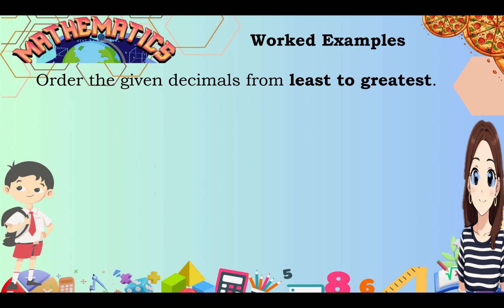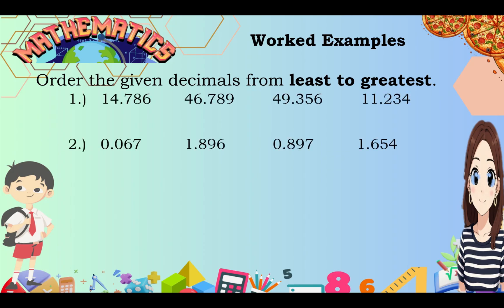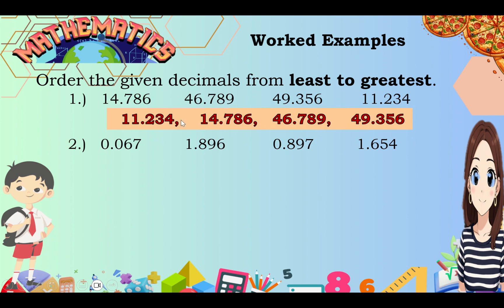Work examples — order the given decimals from least to greatest. Number 1: 14 and 786 thousandths, 46 and 789 thousandths, 49 and 356 thousandths, and 11 and 234 thousandths. All end in the thousandths place. Looking at the whole numbers, the greatest is 49, followed by 46, then 14, then 11. But since we arrange from least to greatest: 11 and 234 thousandths comes first, followed by 14 and 786 thousandths, then 46 and 789 thousandths, and lastly 49 and 356 thousandths as the greatest.